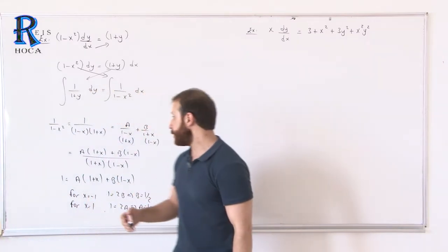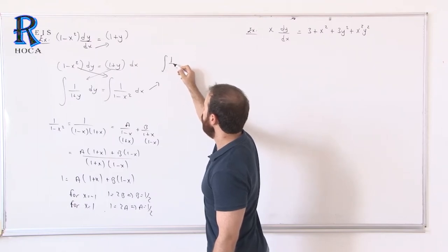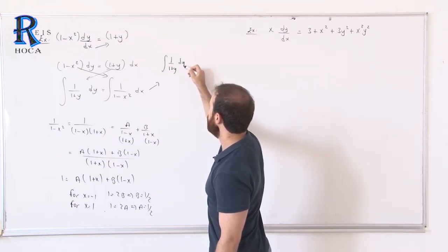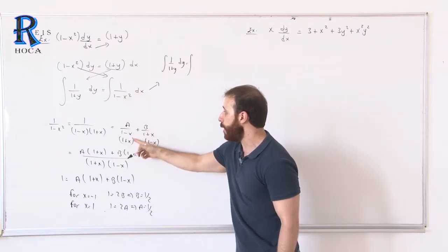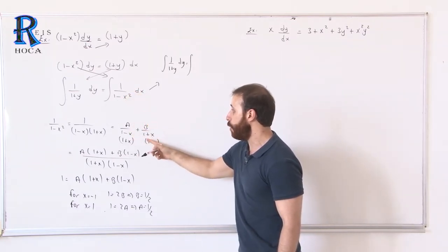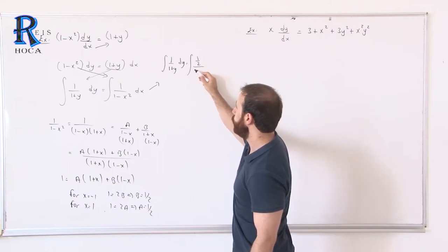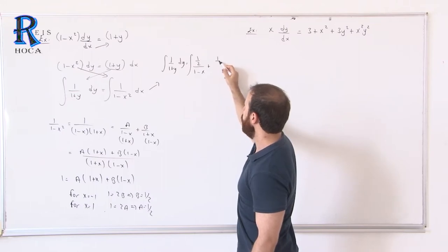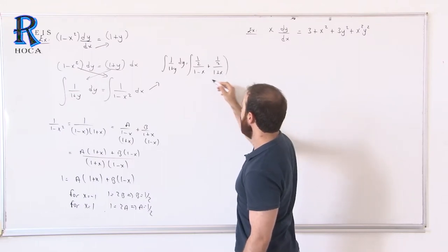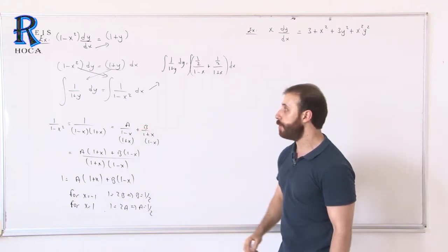So the partial fraction decomposition gives us: 1 over (1 minus x squared) equals (1/2) over (1 minus x) plus (1/2) over (1 plus x), since both A and B equal 1/2.